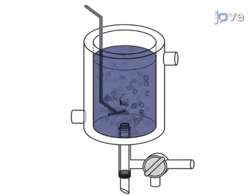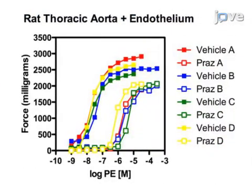Isometric contraction measurements are taken. Ultimately, the isolated tissue bath preparation is used to test receptor function.